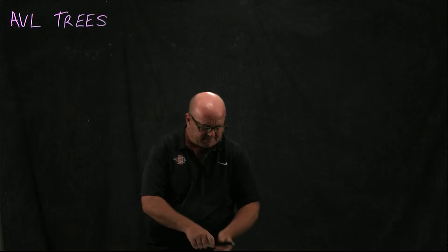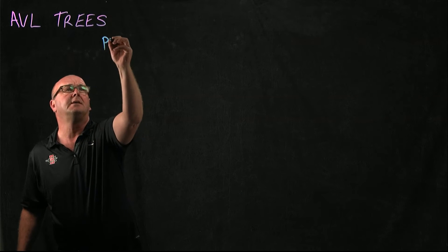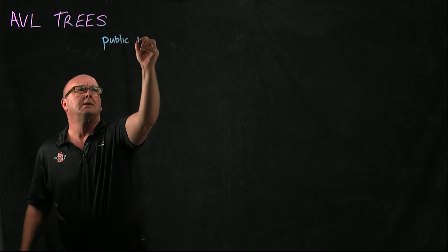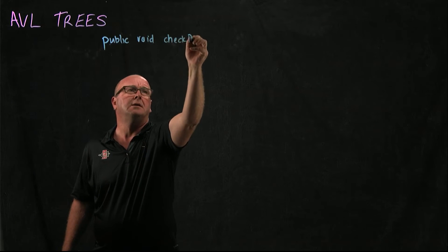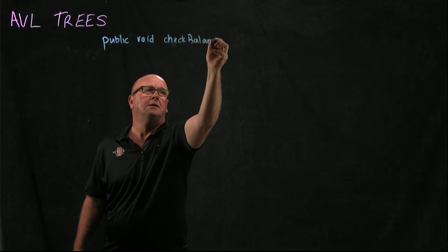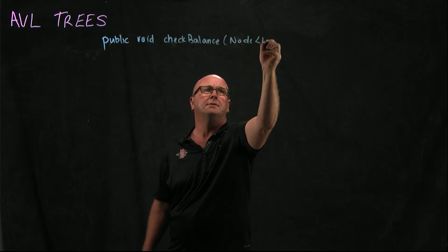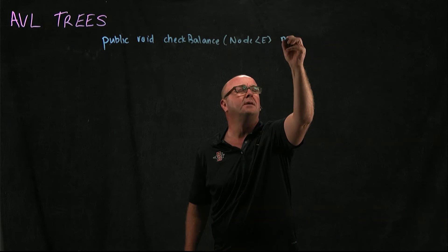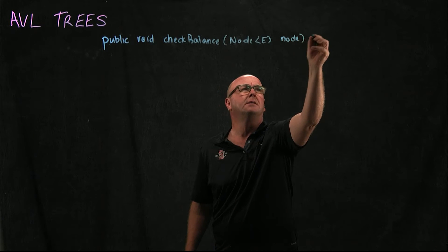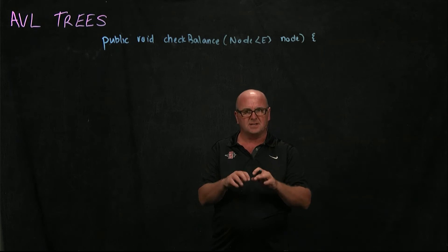So we're going to have a check balance method which is going to take a node. That's our new node initially that we've added.